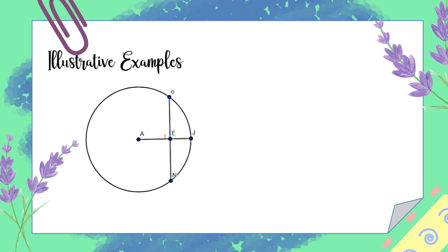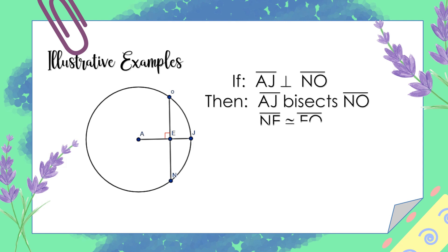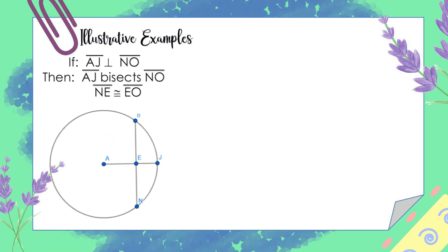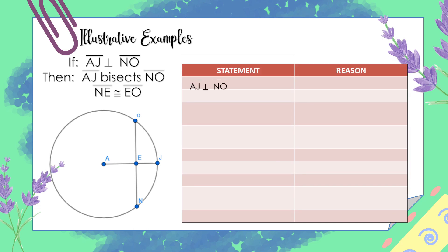Now let's have the example. In circle A, if segment AJ is perpendicular to segment NO, then segment AJ bisects segment NO. Let's prove that in circle A, segment AJ bisects segment NO. First statement: segment AJ is perpendicular to segment NO — given. Segment AO is congruent to segment AN because radii in a circle are congruent.